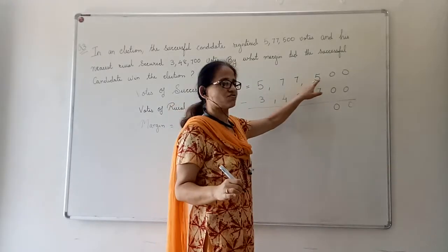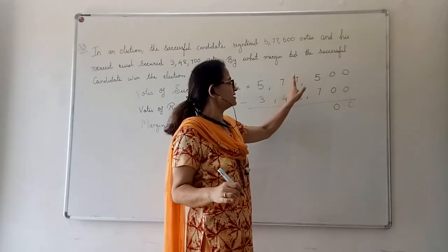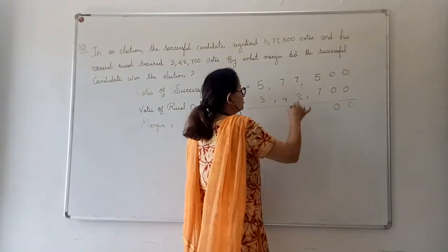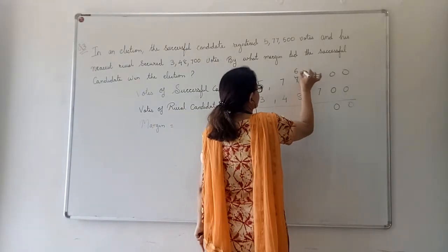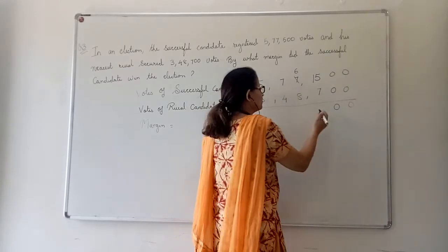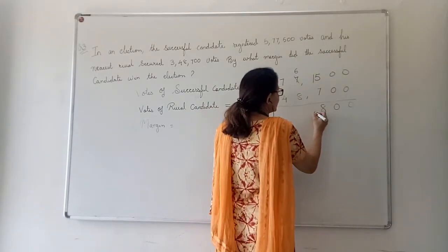Now, I cannot subtract 7 from 5. So, definitely I need to borrow 1 from the neighbor. So, it will become 6 and this will become 15. Now, 15 minus 7 will be 8.